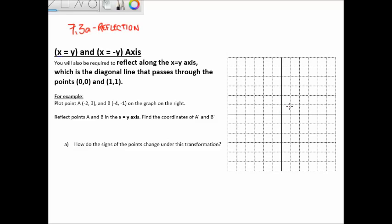The x equals y axis means every point where the x coordinate equals the y coordinate lies on this mirror: 0, 0; 1, 1; 2, 2; 3, 3; 4, 4; 5, 5; 6, 6 — and also negative 1, negative 1; negative 2, negative 2; negative 3, negative 3, and so on. This is basically a diagonal line, which I'll draw in red. This is now our new axis of reflection.